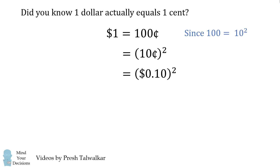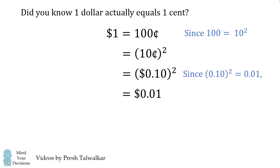Therefore, this equals .1 dollars squared. And since mathematically .1 squared is equal to .01, this is equal to .01 dollars. And .01 dollars is one one-hundredth of a dollar, which is exactly equal to one cent. So there you go — one dollar is exactly equal to one cent.